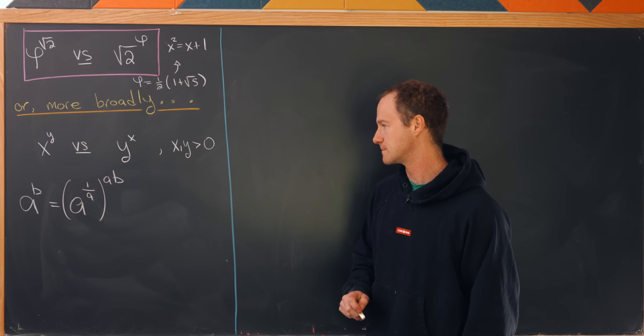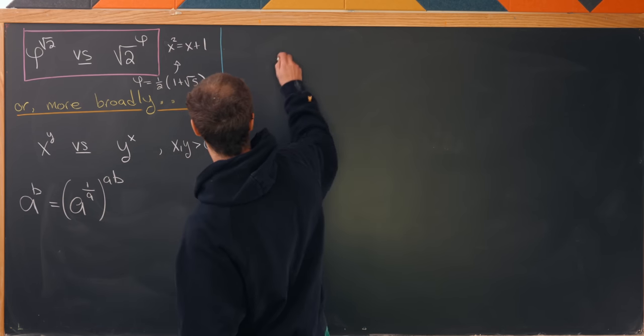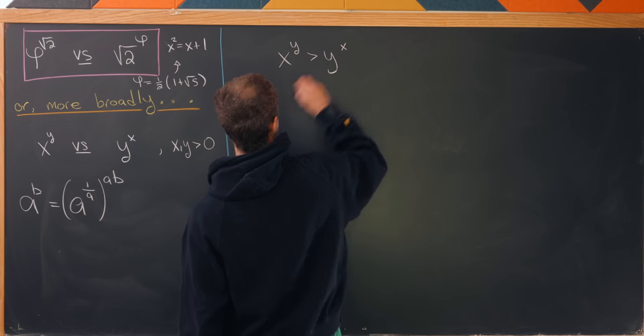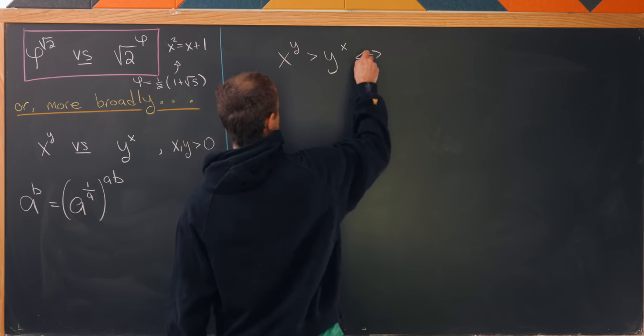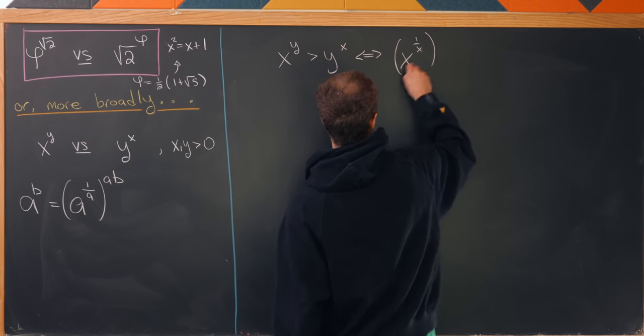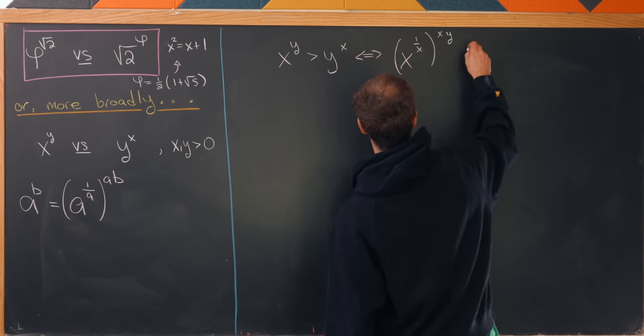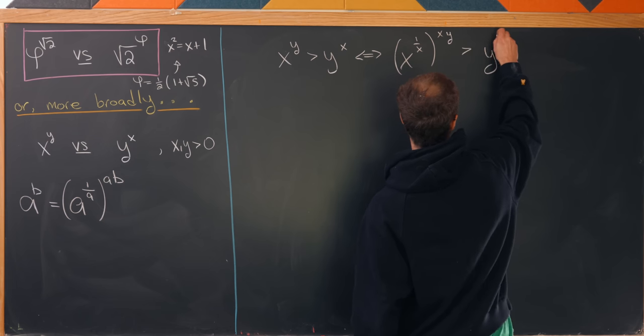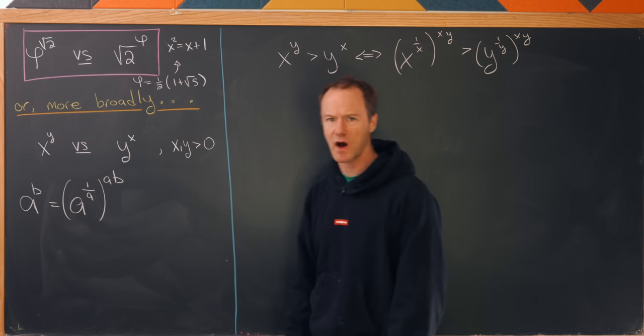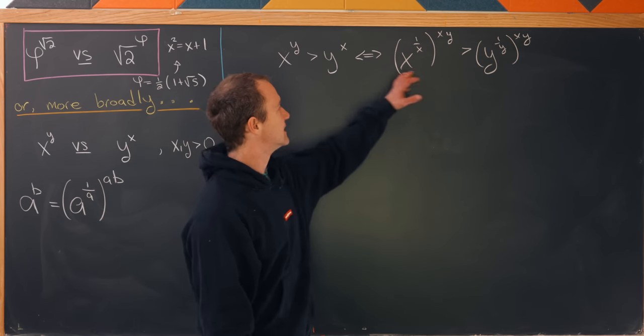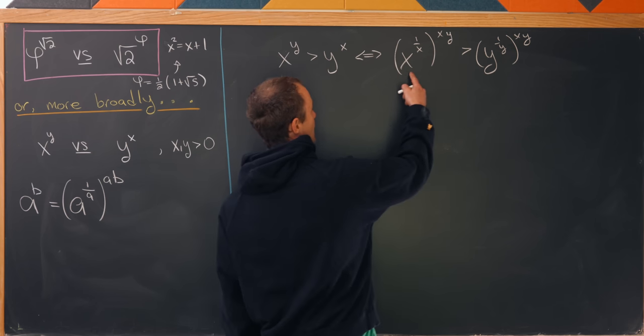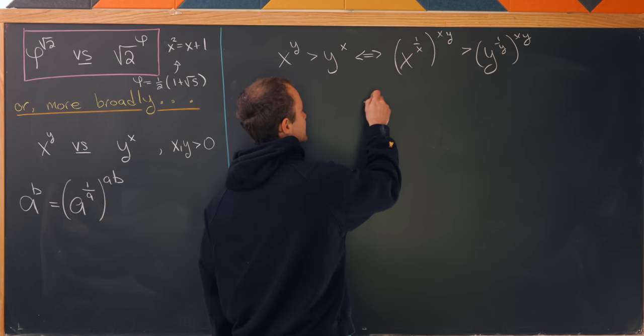But notice that that allows us to say that x to the y is bigger than y to the x precisely when x to the 1 over x raised to the xy is bigger than y to the 1 over y to the xy. But since x and y are both positive this inequality holds exactly when the inequality of the terms in the parentheses hold.